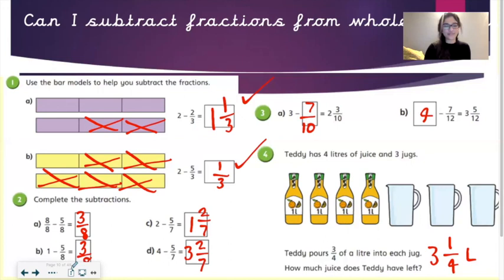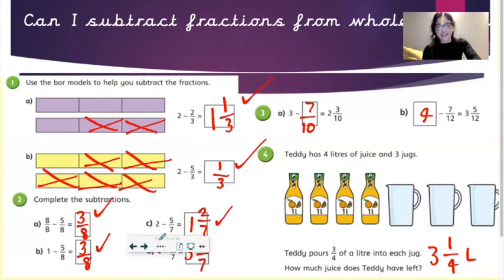Question number two. A, 8 eighths take away 5 eighths equals 3 eighths. Part B, 1 take away 5 eighths equals 3 eighths. Part C, 2 take away 5 sevenths equals 1 and 2 sevenths. And part D, 4 take away 5 sevenths equals 3 and 2 sevenths.